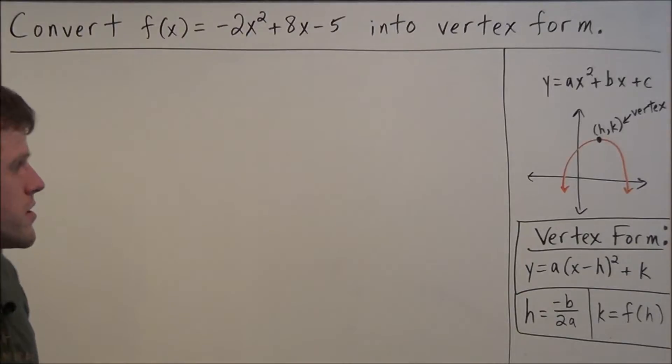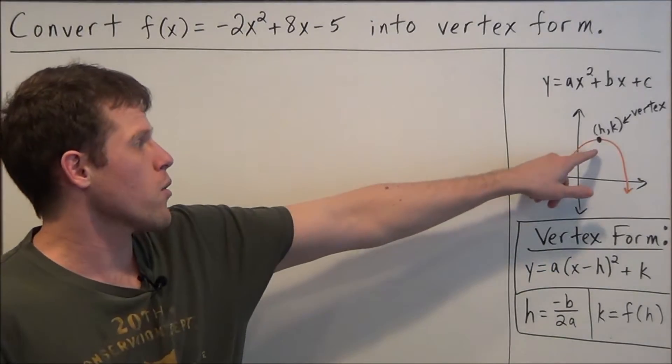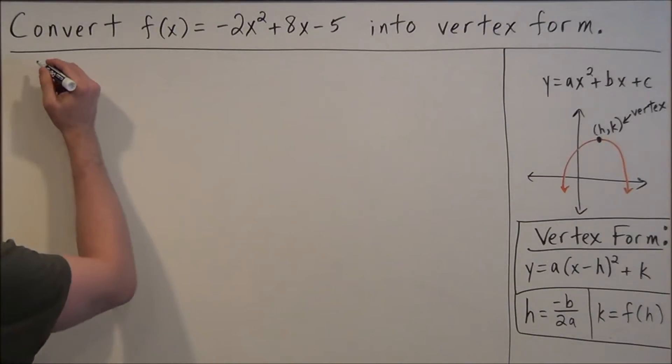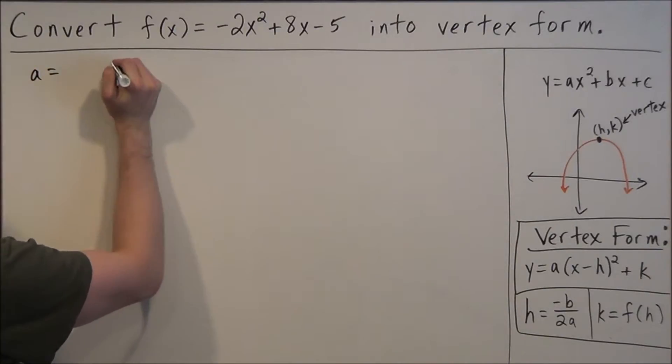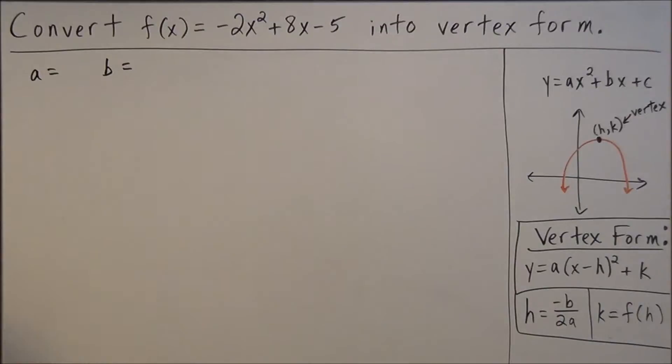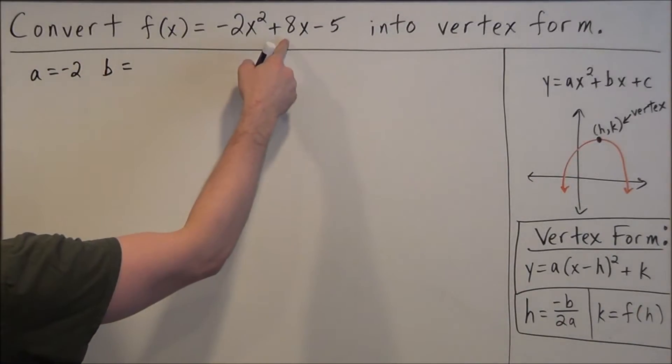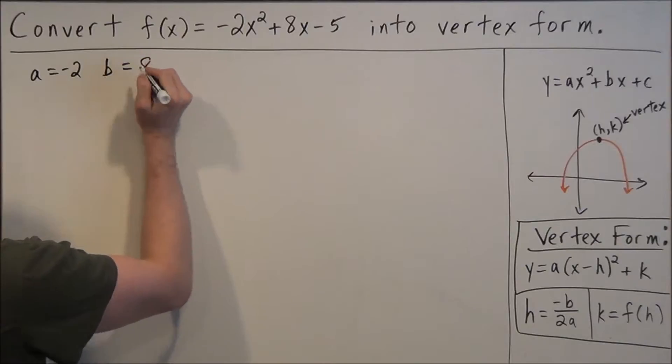So to start this problem here we're going to find our vertex for this quadratic equation. So we're going to identify our a and b value. Now the a value is negative 2 and the b value is the coefficient of x that's equal to 8.